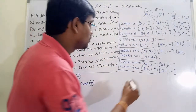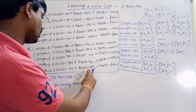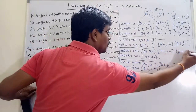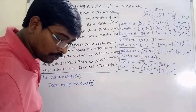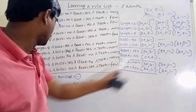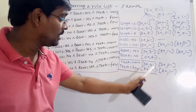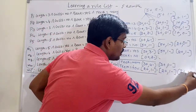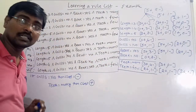Again applying the same procedure: for bake equal to yes we have two positives and one negative; for bake equal to no this is a completely positive class — no need to calculate further. Teeth equal to few gives two positives and one negative. The procedure continues in a similar fashion.